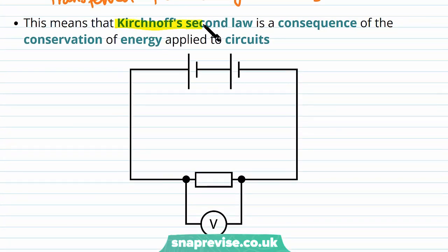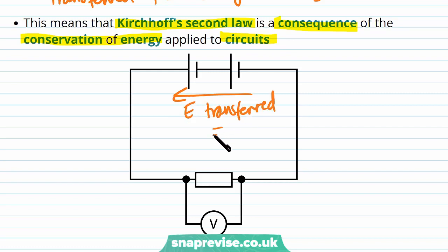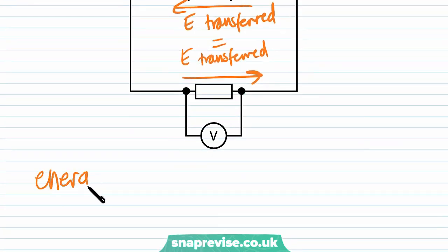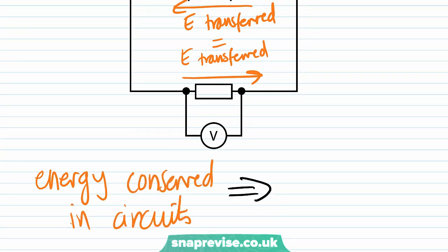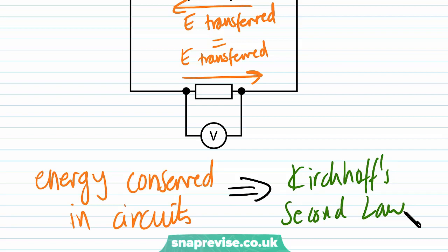Kirchhoff's second law is therefore a consequence of the conservation of energy applied to circuits. The energy transferred to the charge carriers equals the energy transferred from the charge carriers, showing energy is conserved. This derives from the principle that energy cannot be created or destroyed — only transformed from one form to another.